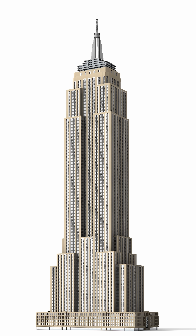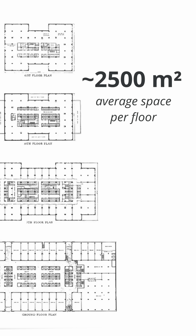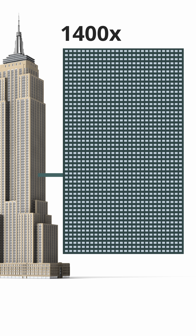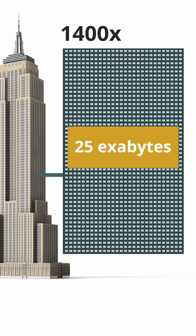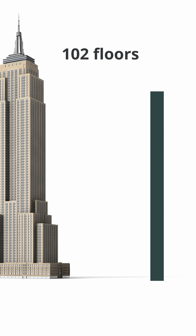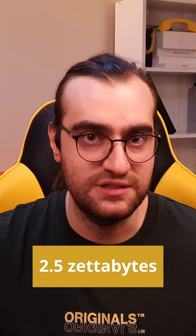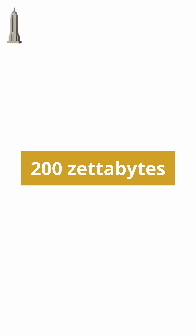Now let's look at an iconic building: the Empire State Building. Its average floor space is around 2,500 square meters, so on a single floor you can fit 1,400 server cabinets, making 25 exabytes of data. The building has 102 floors, giving around 2,500 exabytes — which is 2.5 zettabytes.